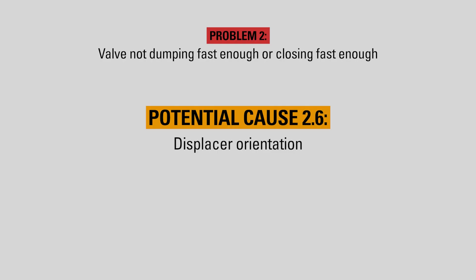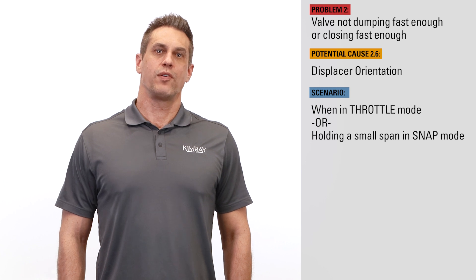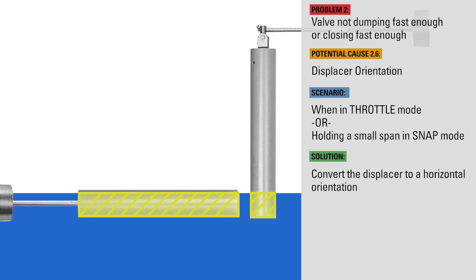When in throttle mode or trying to hold a small span in snap mode, the ideal displacer orientation is horizontal because you get more change in displacement per fluid level change, so the controller reacts sooner than it would in vertical orientation.